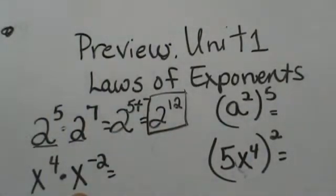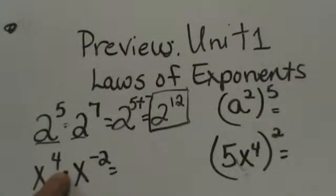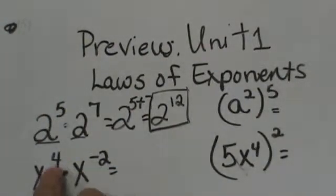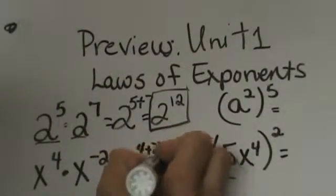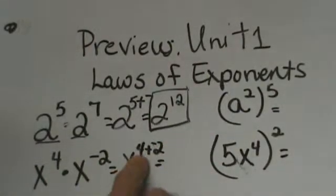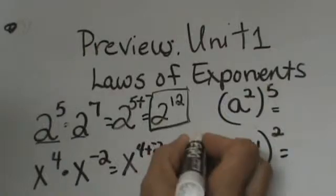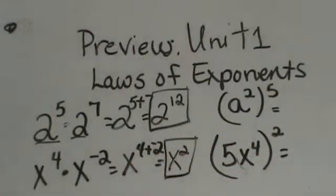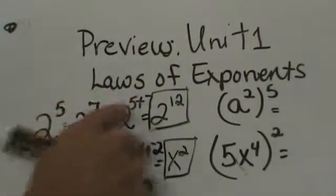Let's look at it in terms of a variable. We have x to the 4th times x to the negative 2nd. Now we are multiplying like bases, but this time we have a negative exponent. You just do the same thing — when you are multiplying you add the exponents. I am going to take x to the 4th plus negative 2, add 4 and negative 2, and get a positive 2, so that is x squared. Notice I did not change the base.